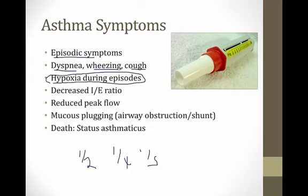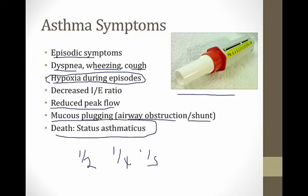Another finding in asthma patients is a reduced peak flow, measured with a peak flow meter. A patient simply blows into it and it measures the highest velocity of airflow they can create; peak flow obviously falls in asthma because there is an obstruction. Patients with asthma can also get mucus plugging, causing airway obstruction and shunting. If asthma is severe enough, patients get status asthmaticus, where they become hypoxic and can die — but this requires severe untreated asthma.